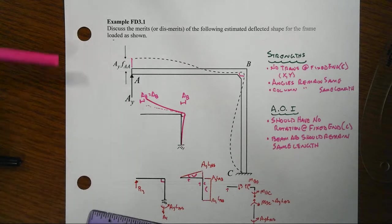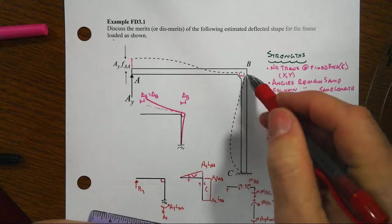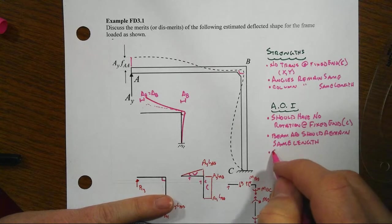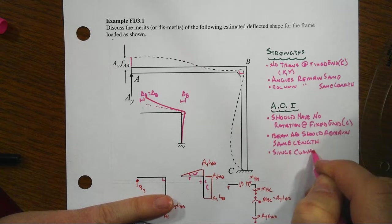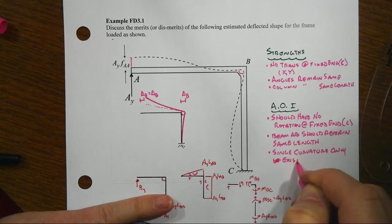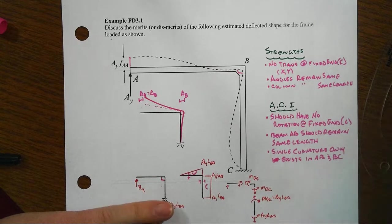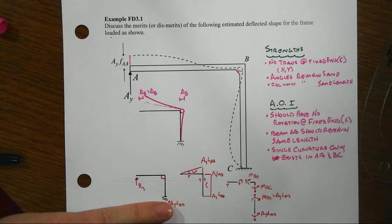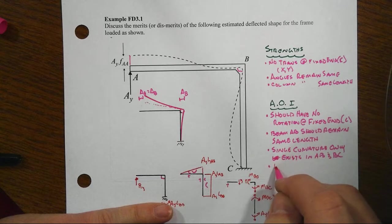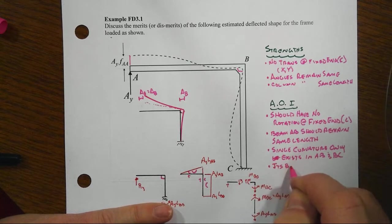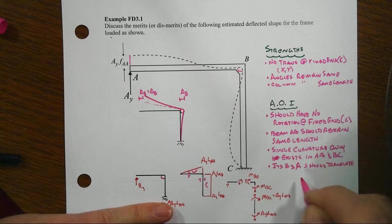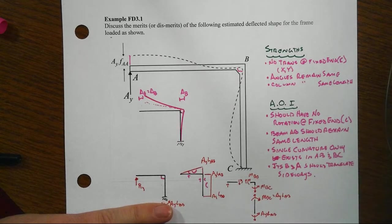So what that tells us is areas of improvement. We've got shown here reverse curvature in both the beam and the column. So we shouldn't have that. Area of improvement should be that single curvature only exists in AB and BC. And we don't have that.